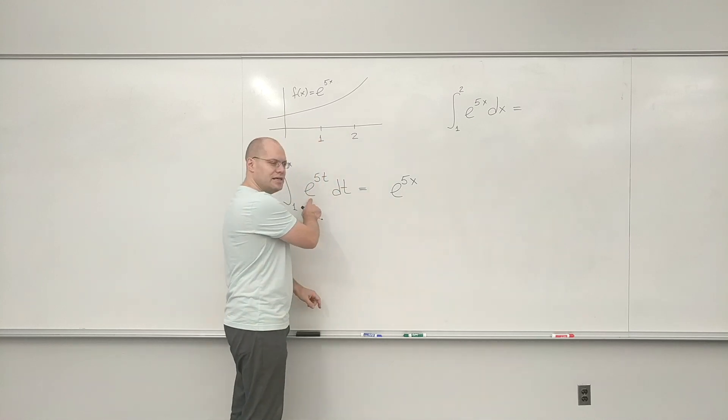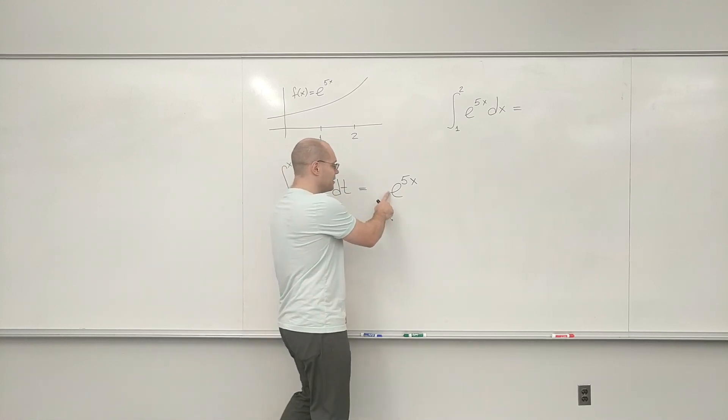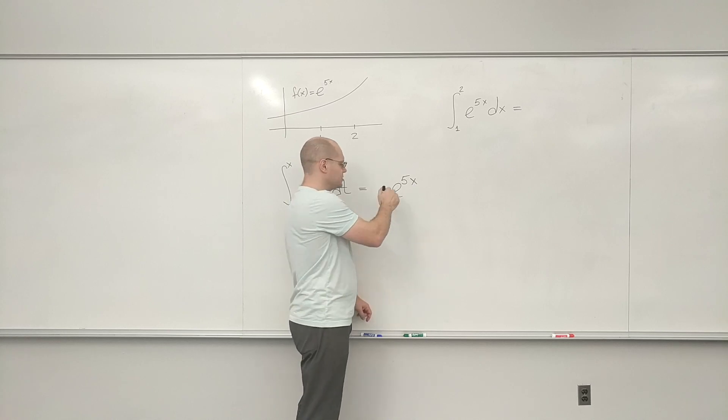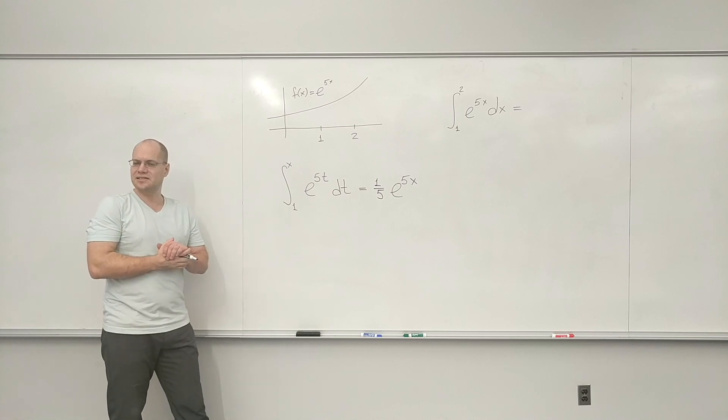So I missed my target by a factor of 5. I want the answer to be e to the 5x. But the answer I'm getting is 5e to the 5x. So I have to put in a factor of 1 fifth to make up for that near miss. So 1 fifth e to the 5x. And that's correct.